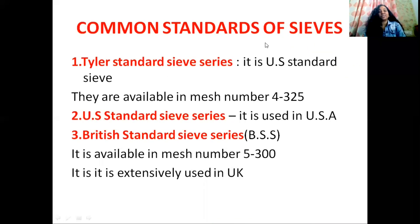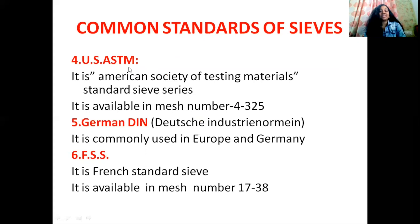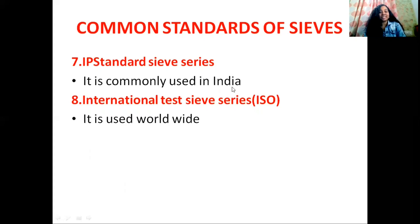Now let's see the common standards of sieves. The first is the Taylor standard sieve series — it is a US standard sieve, available in mesh numbers 4 to 325. Next, US standard sieve series, used in the USA. British standard sieve series is available in mesh numbers 5 to 300, extensively used in the UK. US ASTM (American Society of Testing Materials) is available in mesh numbers 4 to 325. German DIN is commonly used in Europe and Germany. FSS sieve series is the French standard sieve, available in mesh numbers 17 to 38. IP standard sieve series is commonly used in India. International test sieve series (ISO) is used worldwide. These are the important common standards of sieves.